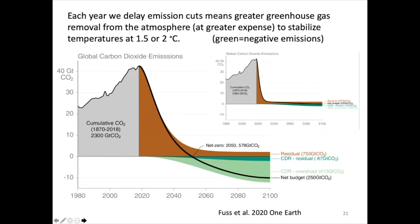A closing paper led by Sabine Fuss on negative emissions shows that if we decarbonize quickly, the green slice representing negative emissions needed is much smaller. The longer we go without mitigating and turning the corner on emissions, the greater and more expensive that green wedge needs to be — reaching hundreds to $500 per ton CO2 later in the century — with greater vulnerabilities associated with those activities. I'll stop there and I'm happy to take questions.